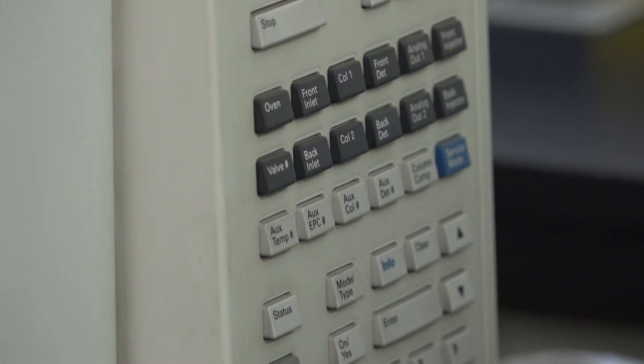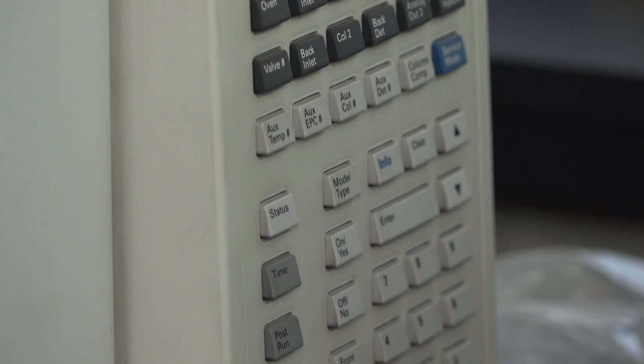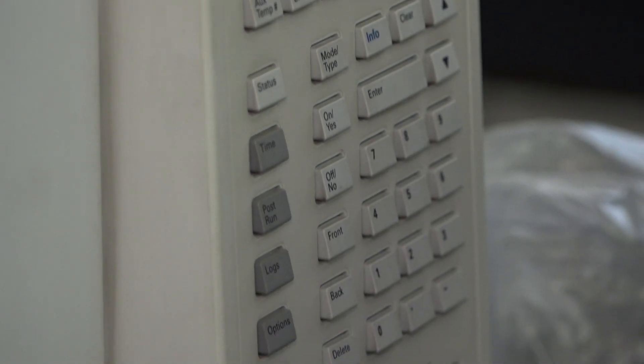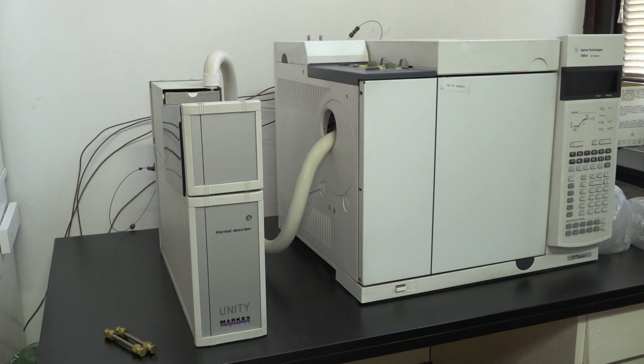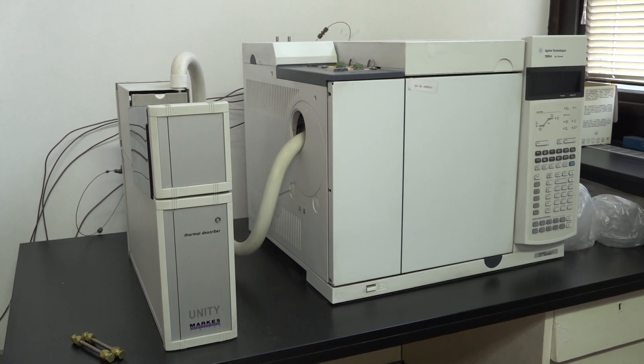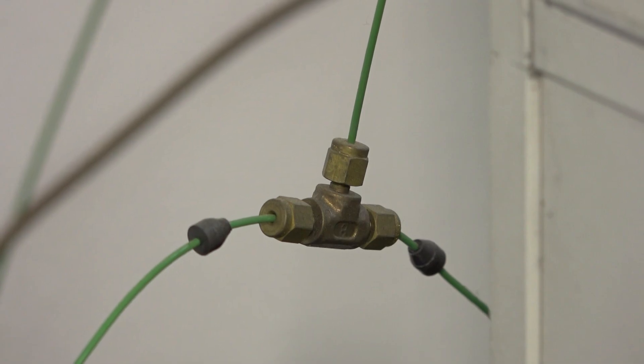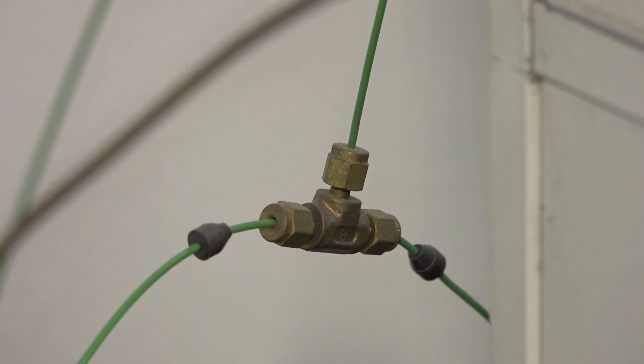Hajde da pričamo sada o ovom drugom delu. U toj vodi se nalaze određene suspendovane materije, i organske materije kao zagađivači i mogu da se nalaze recimo teški metali kao kod rudničkih voda. I pre nego što bi te vode trebalo da se vrate u prirodne vodotokove, ti teški metali bi trebali da se na neki način uklone.